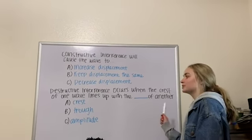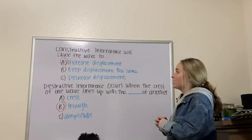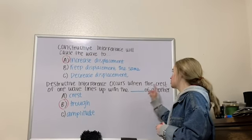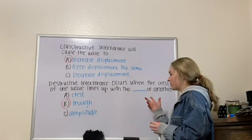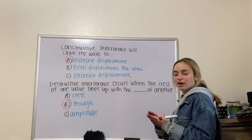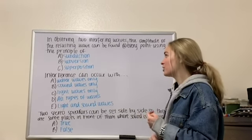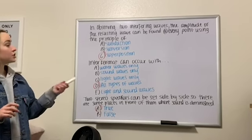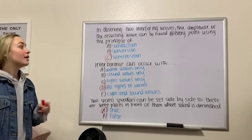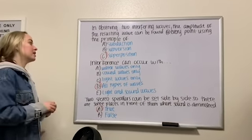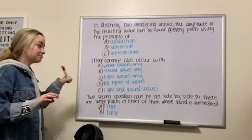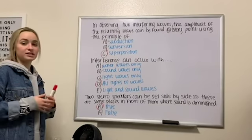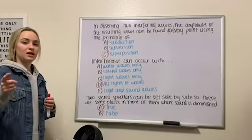Here are a couple of quiz questions — pause and answer them, then check with me. Constructive interference causes the wave to increase its displacement. Destructive interference occurs when the crest of one wave lines up with the trough of another, producing zero interference. The amplitude of a resulting wave can be found at every point using the principle of superposition. Interference can occur with all types of waves, and two stereo speakers placed side by side will create areas of diminished sound due to destructive interference.